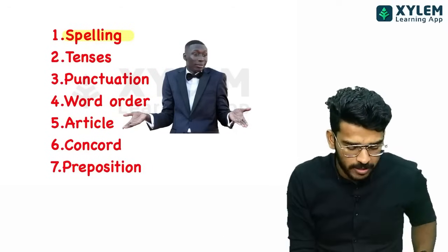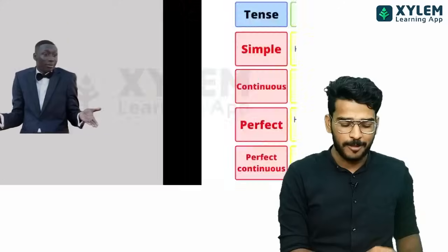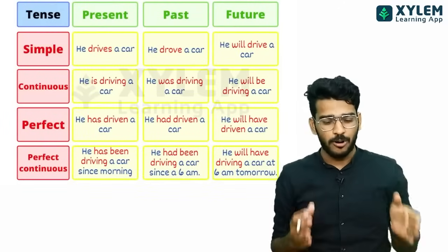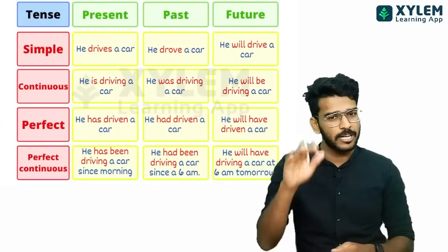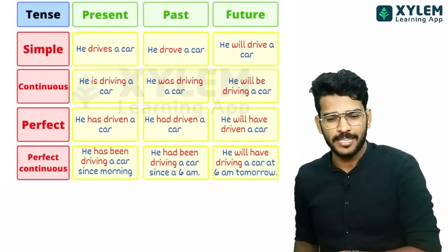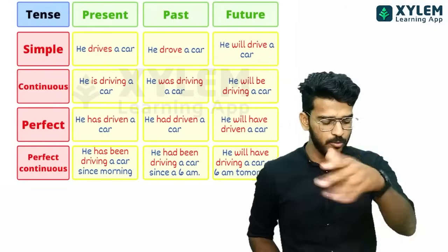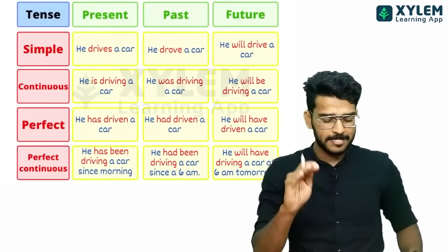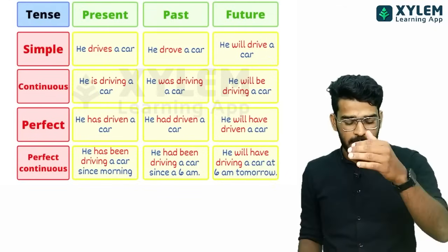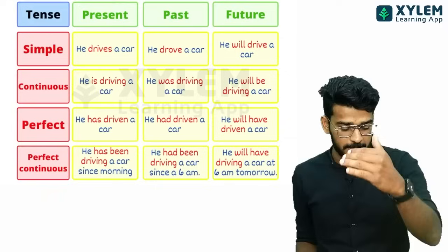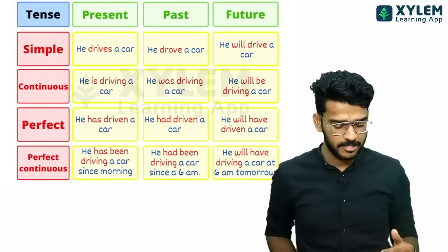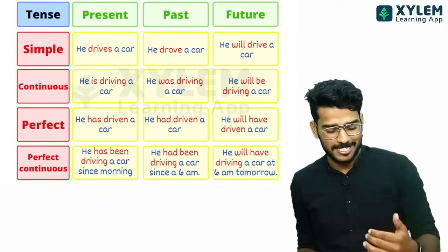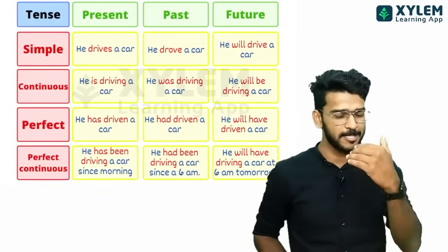Next one is Tenses. Tenses is very simple. I am going to write a box just to show you a screenshot which will be useful. Simple present, simple past, simple future. Simple present continuous, present perfect, present perfect continuous. Simple past continuous, past perfect, past perfect continuous.